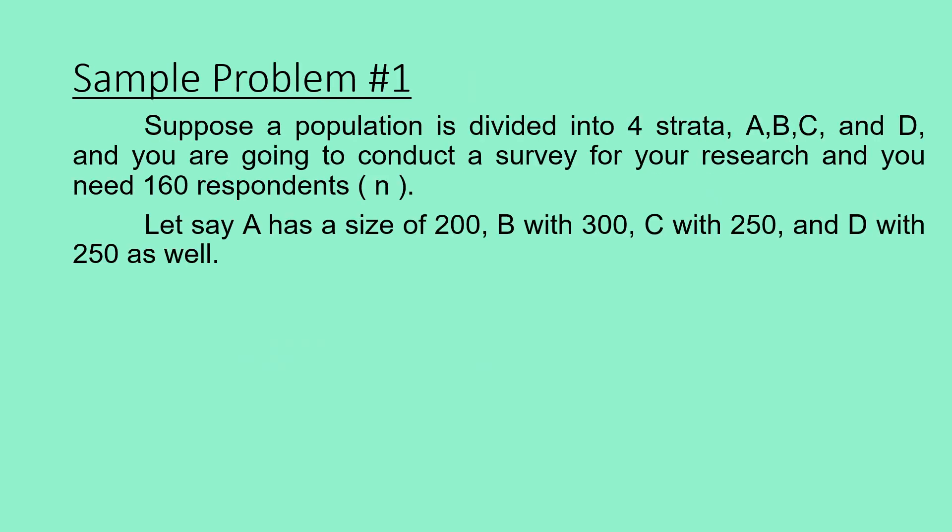We now have sample problem number 1. Suppose a population is divided into 4 strata — A, B, C, and D — and you are conducting a survey for your research and you need respondents. Small n stands for the sample size, the number of individuals in our sample. Stratum A has a size of 200, B with 300, C has 250, and stratum D also has 250. We will be doing the stratified sampling using equal allocation.